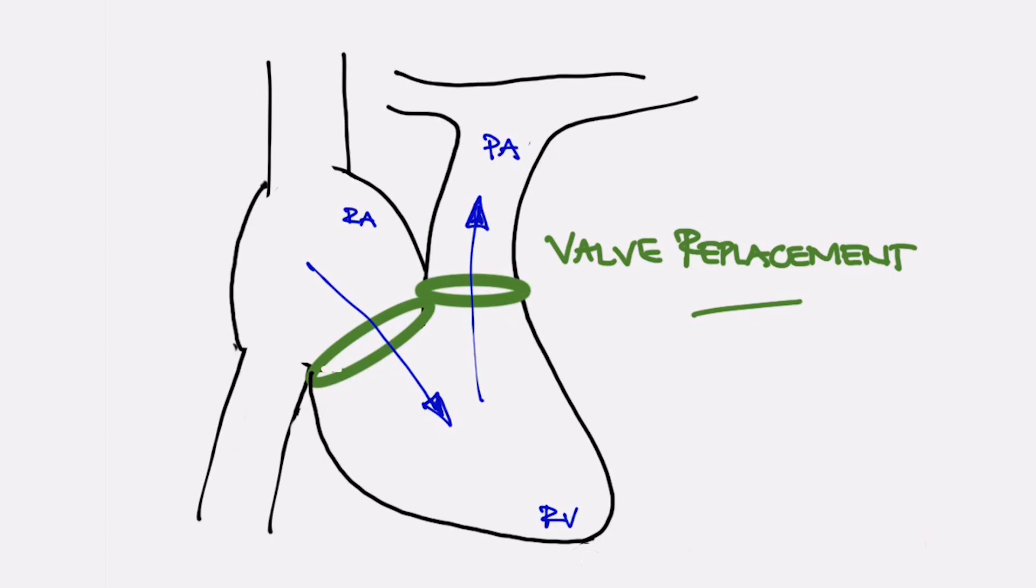Interestingly, left-sided valve disease occurs infrequently in patients with carcinoid heart disease, but may occur if there's a hole in the heart and the serotonin-rich blood from the right side transitions to the left side of the heart.